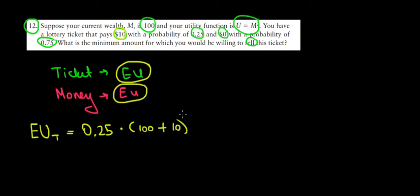So that would be the $100 that we have at the moment plus the $10 that we would win from here to the power 2 because the utility is our money to the power 2 plus a 75% probability, so 0.75, that we win nothing. So we would just keep our $100 and have no money from the ticket.